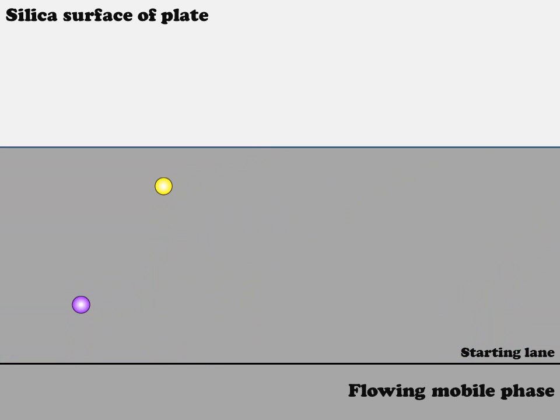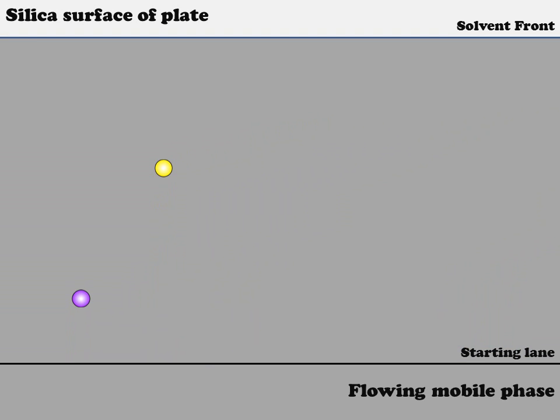Here comes the mobile phase. And as you can see, again, our yellow compound, by virtue of its lower polarity, moves a greater proportion of the distance traveled by the solvent or by the mobile phase. We can qualitatively at this point say that our yellow compound moves farther than our purple compound in this system, but we prefer to have a quantitative method of describing this behavior.